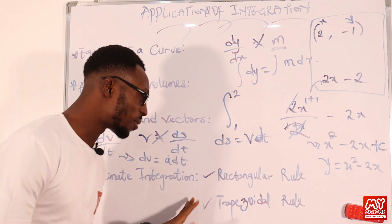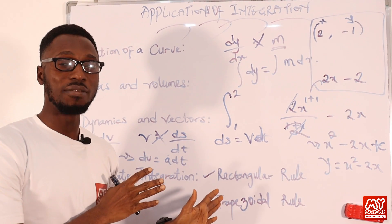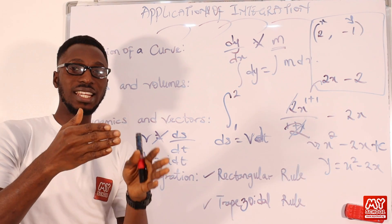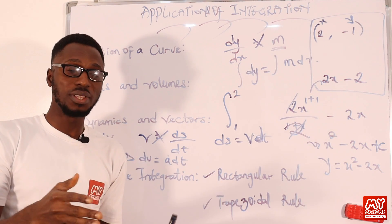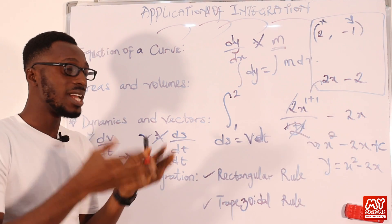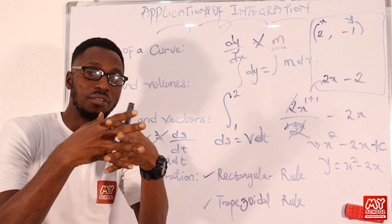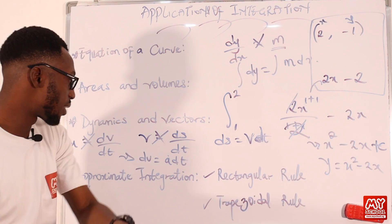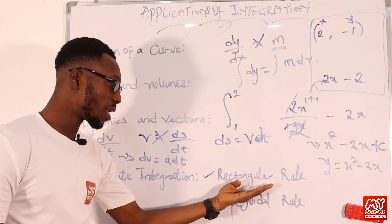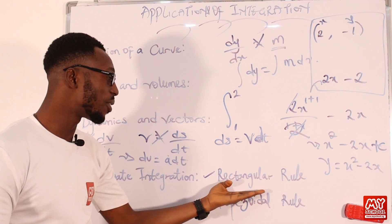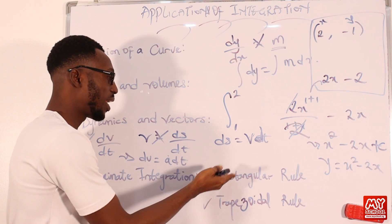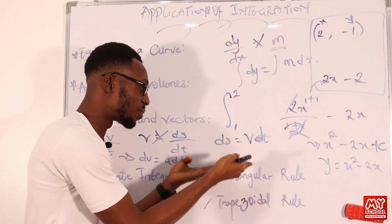Then we come to approximate integration. This application involves the concept whereby you break down the particular function or the area you are dealing with. You break it into strips. So once you have broken this into strips, then your answer will just be the sum total of the integral values you are getting. You can actually present these strips in the form of rectangular strips. So that's why we call it the rectangular rule. Your division of your areas will just be in the form of the strip, and the strip will be in the form of rectangles.